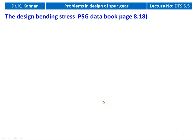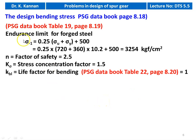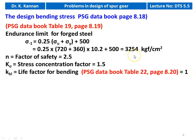Then we calculate the design bending stress. From PSG Data Book, table 19, page 8.19, endurance limit for forged steel: σ₋₁ = 0.25 × (σu + σy) + 500. Substituting: 0.25 × (720 + 360) × 10.2 + 500 = 3,254 kgf/cm².